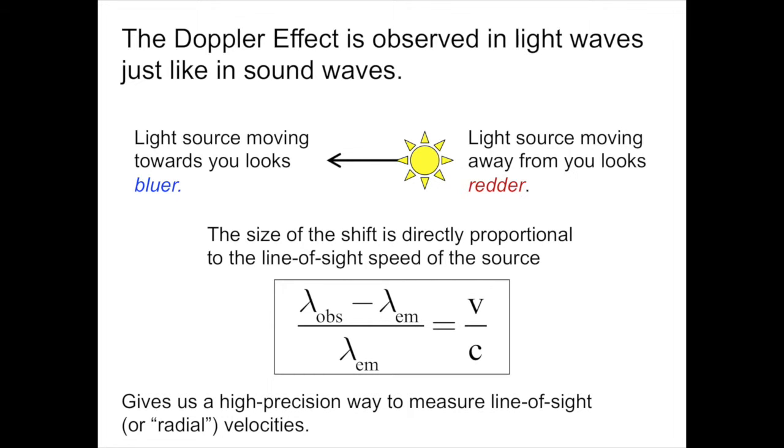We can actually measure the speeds of objects to a very tiny fraction of the speed of light. Current state of the art in astronomical spectrographs can measure speeds of centimeters per second, a very slow walk. This gives us a high precision way to measure line of sight, or radial velocities. The term radial is because we see ourselves at the center and think of the object as moving radially away from or towards us.